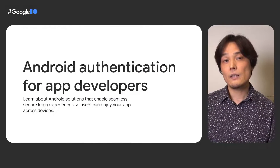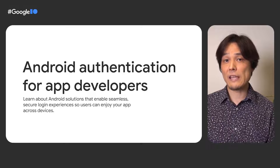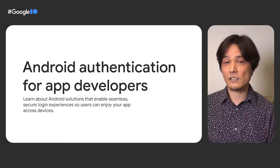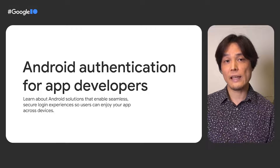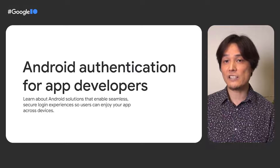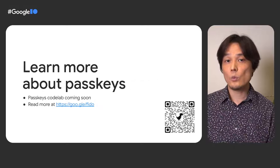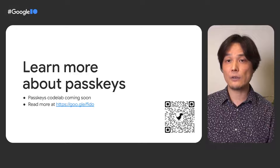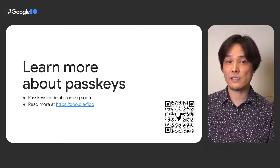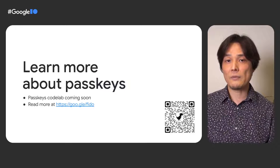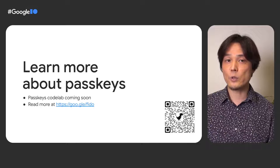The QR code authorization is required only once. The next time, the user can pick the name of the phone from the discoverable credentials list, skipping the scanning. Passkeys on Android will be available later this year. To see typical user journeys with passkeys, check out the IO session, Android Authentication for App Developers by Jay and Diego. We are working on a code lab so you can learn how to build a sign-in using a passkey. Finally, you can learn more about FIDO and WebAuthn from google.com/fido.